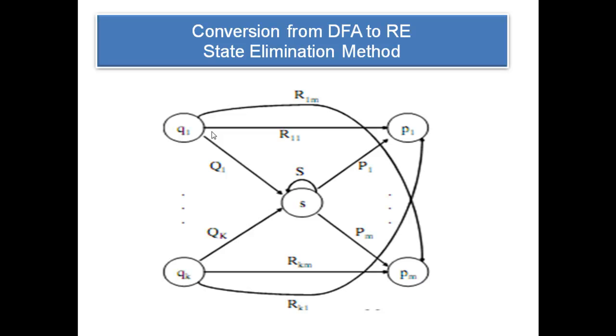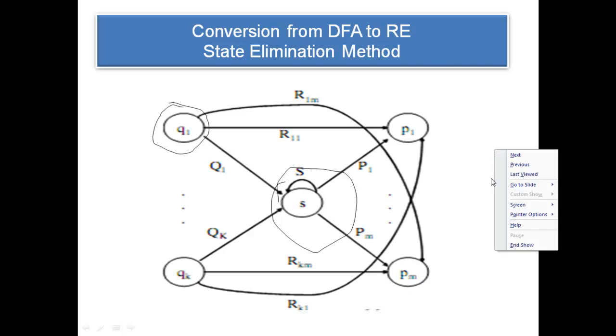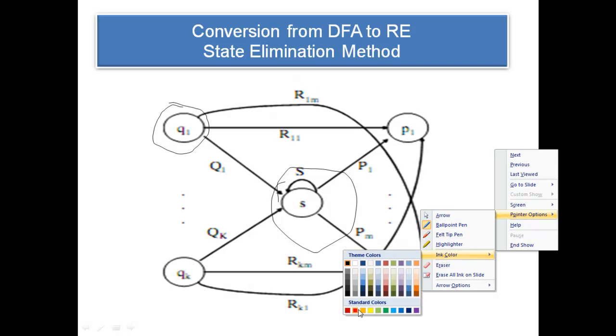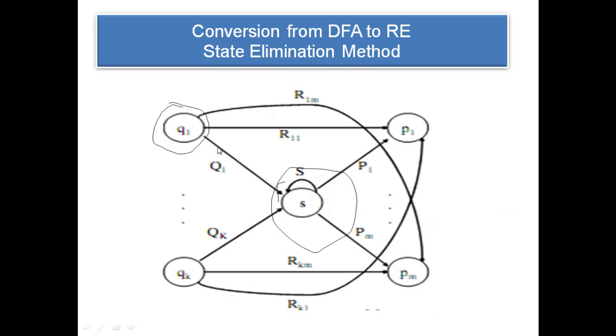This DFA clearly states the set of all possible edges that you can have. Assume this is your source state. The set of all Q states represents your source state, and the set of all P states ranging from P1 to PM represents your final states. Assume that you have a state S which is going to be eliminated now. The set of all possible edges from these source states to these destination states are clearly being shown. The incoming edges are being denoted by the letters Q, wherein the outgoing edges are represented by the edges P.